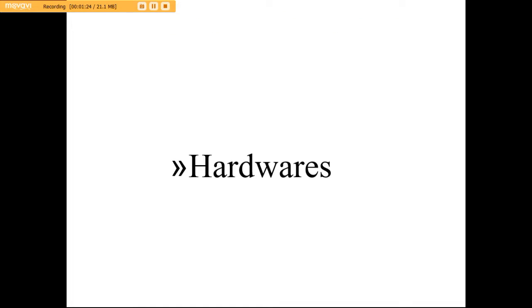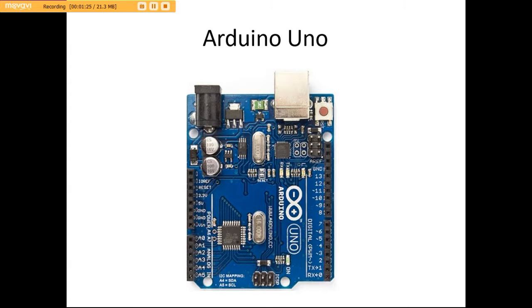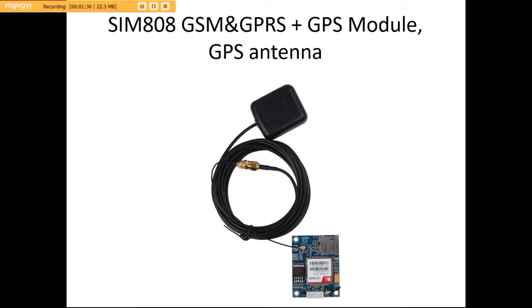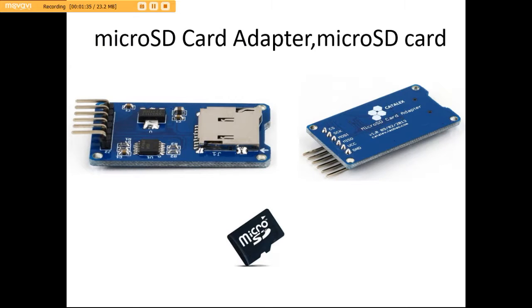Let's have a look at the hardware we used in the project. We have used an Arduino Uno, a Bluetooth module HC-05, HC-114, a SIM808 GSM and GPRS module plus GPS antenna, a micro SD card adapter and a micro SD card.